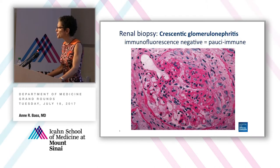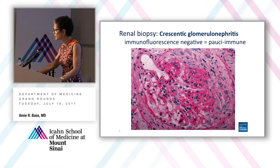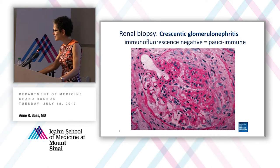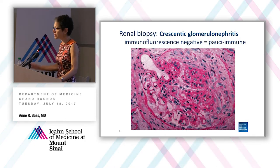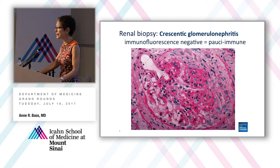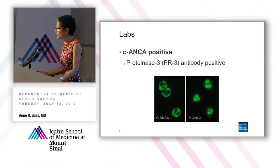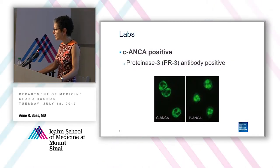He has a renal biopsy, and it shows a crescentic glomerulonephritis. For those of you who are not nephrologists, here's the glomerulus — this crescent-shaped thing here is a cellular crescent. You can see these nice open capillary loops here, but not in this area of ischemia. The immunofluorescence was negative, so we call this a pauci-immune crescentic glomerulonephritis. The patient is C-ANCA positive, and on confirmatory testing, proteinase 3 antibodies are positive. You see the cytoplasmic staining here versus perinuclear.